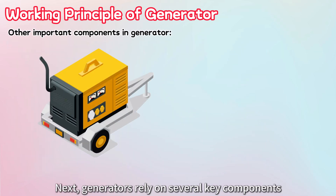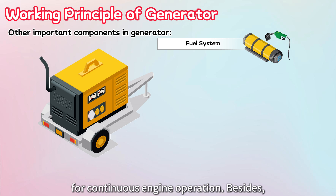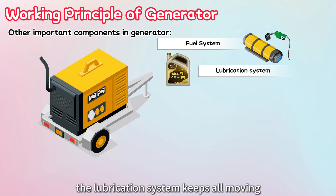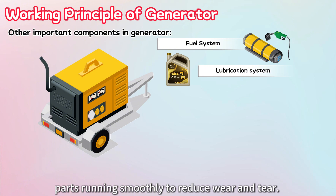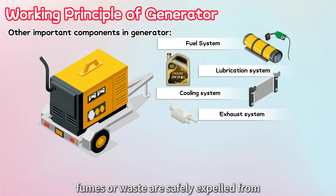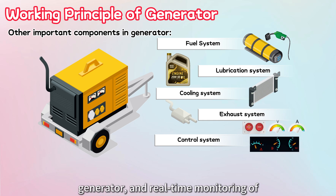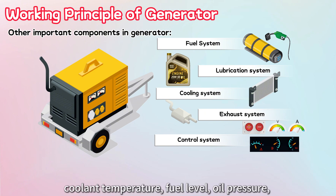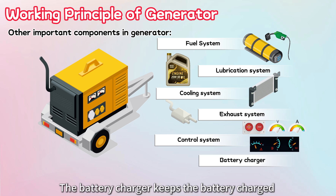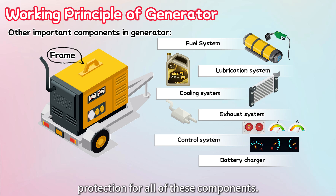Generators rely on several key components to ensure smooth and efficient operation. The fuel system supplies the fuel needed for continuous engine operation. The lubrication system keeps all moving parts running smoothly to reduce wear and tear. To prevent overheating, the cooling system circulates coolant and provides essential ventilation. The exhaust system ensures that combustion fumes are safely expelled. The control panel allows us to start or stop the generator and monitor parameters such as voltage, current, coolant temperature, fuel level, oil pressure, and rotational speed. The battery charger keeps the battery charged and ready for use, and the frame provides structural support and protection for all components.